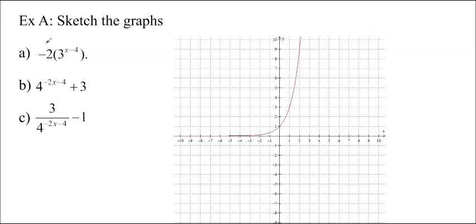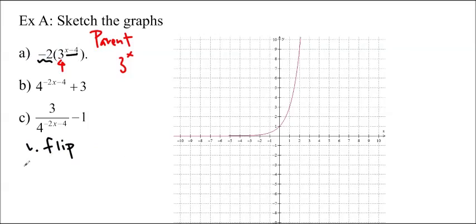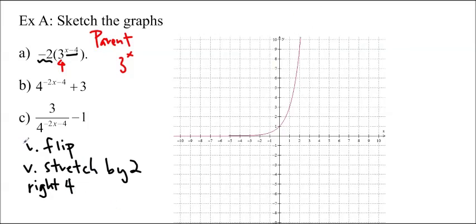Let's do some sketching. We have y equals negative 2 times 3 to the (x minus 4). The base here is 3, so we need a parent function of 3 to the x. The 3 is not the stretch, so be careful about that — make sure you differentiate between the base and the vertical stretch. The negative 2 out in front is the vertical dilation, and x minus 4 gives us a horizontal shift of right 4. I'll label the parent function and its horizontal asymptote with major points: (1, 3), (2, 9), and one-third.